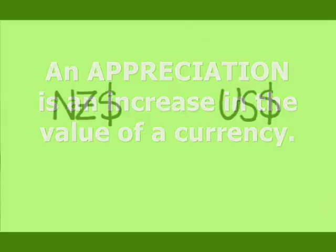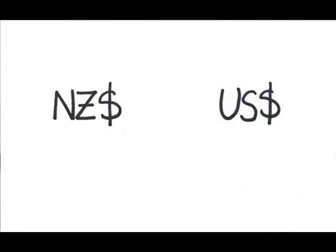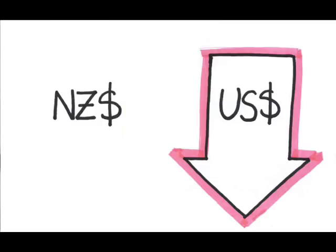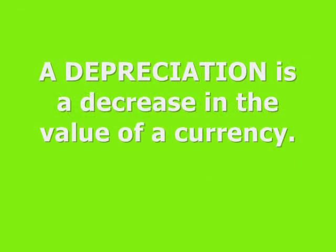When dealing with bilateral exchange rates like this one — that is to say, the relative value of two currencies — it is necessarily the case that as one currency becomes stronger or more valuable relative to the other. In this case, the New Zealand dollar is increasing in value relative to the US dollar. The other currency is decreasing in value, or depreciating. As the New Zealand dollar appreciates, the US dollar is getting relatively weaker, or depreciating.